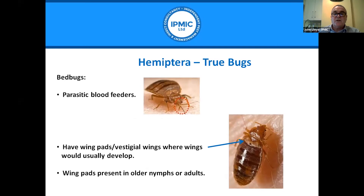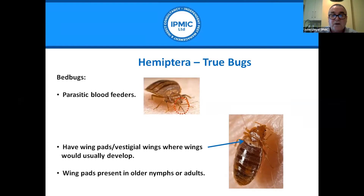Within Hemiptera, bed bugs are parasitic blood feeders with vestigial wing pads — where wings would normally develop but are no longer required. The wing pads are present in both older nymphal stages and in adults.